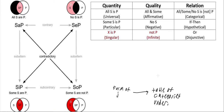Kant got his table of judgments from the Aristotelian type of logic that people were steeped in during his time — from the time of Aristotle all the way up until about the 19th century, when things like quantificational logic and modal logic sort of improved upon the Aristotelian form of logic. So I have here the table of opposition.